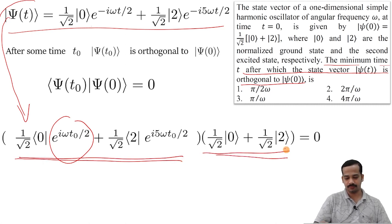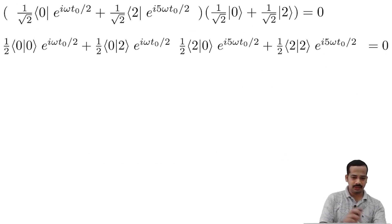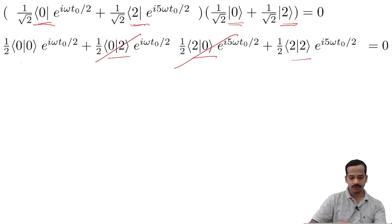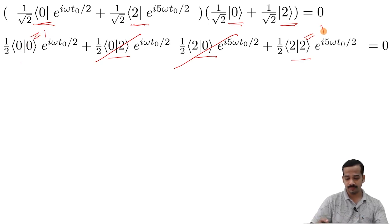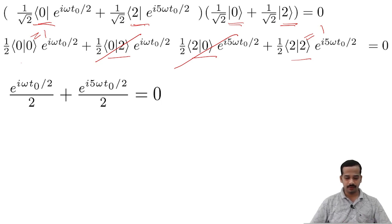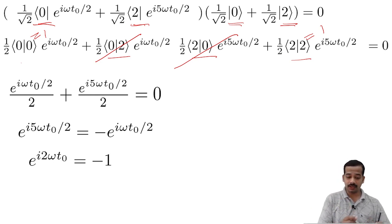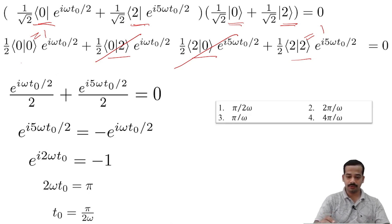This is the state at t-naught and this is the state at 0, and their inner product equals 0. Taking the inner products individually: ⟨0|0⟩ is here, ⟨0|2⟩ and ⟨2|0⟩ vanish due to orthogonality, and ⟨2|2⟩ equals 1 due to normalization. Solving this equation and rearranging, we get e to the power i phi omega t-naught by 2 equal to e to the power minus i omega t-naught by 2, which gives e to the power i 2 omega t-naught equal to 1. For the minimum time, 2 omega t-naught equals pi, so t-naught equals pi by 2 omega. Therefore option 1 is the right answer.